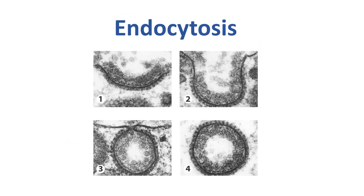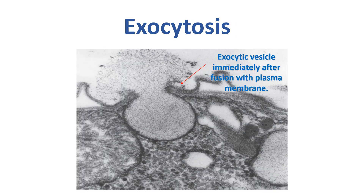Here are electron microscope pictures of endocytosis step by step and an example of exocytosis where material is leaving the cell as it's released. You should now be able to describe all the different methods of passive transport including osmosis, and describe active transport using protein pumps, endocytosis, and exocytosis.